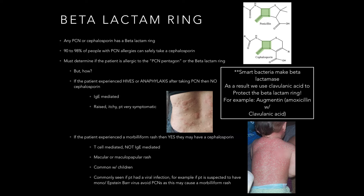Smart bacteria make beta-lactamase — they've found a way to break down this beta-lactam ring. Humans came up with a way to protect that beta-lactam ring from bacteria with something like clavulanic acid. We know that amoxicillin with clavulanic acid is Augmentin — a drug that has clavulanic acid in it so that it can protect against bacteria that can break down our beta-lactam ring.